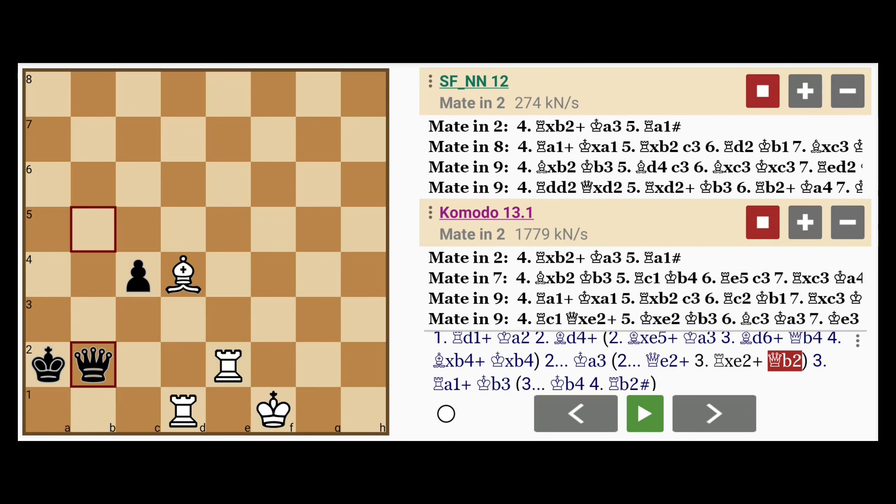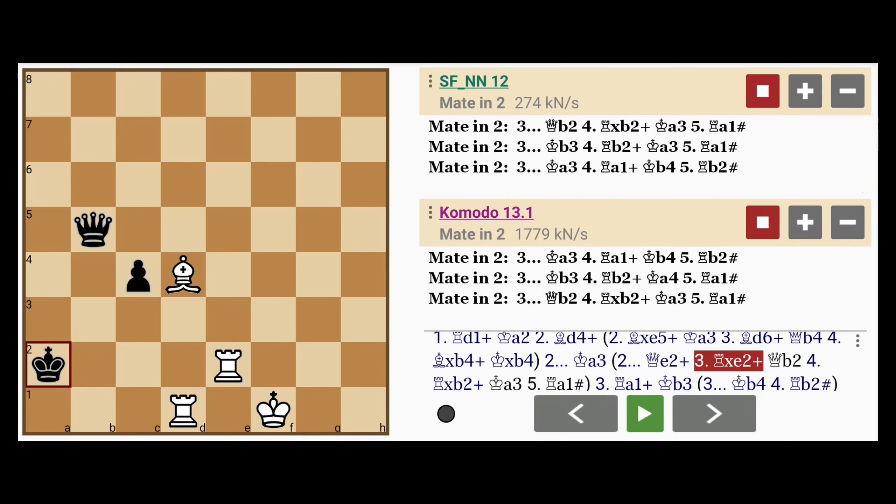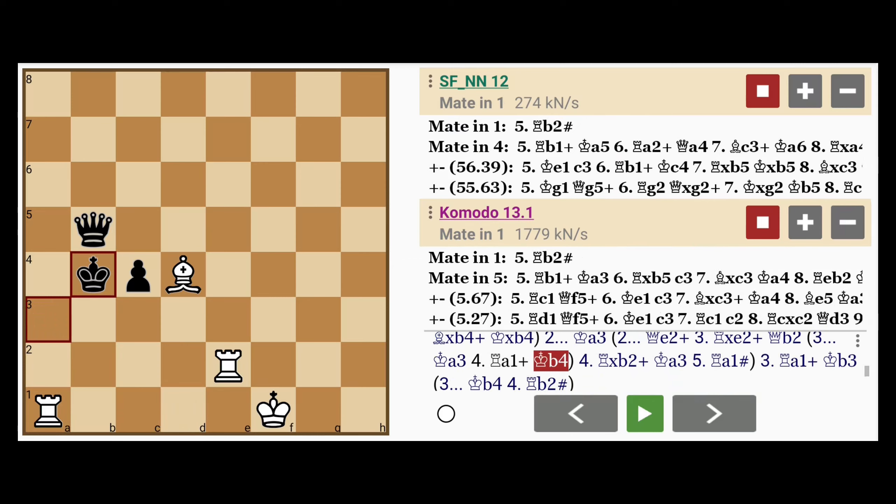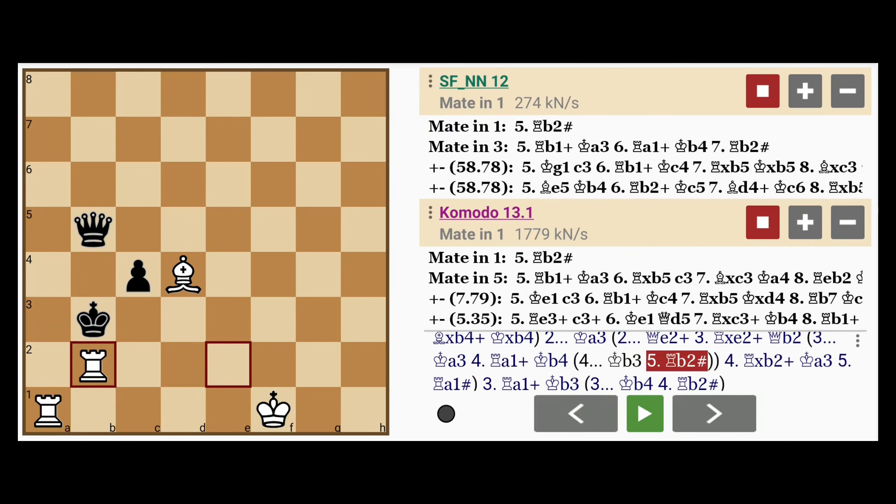Now here, if queen to b2, another intervention, well then rook captures b2. And king to a3, it's rook to a1. And as before, king to b4 or king to b3, it's rook to b2 with mate.